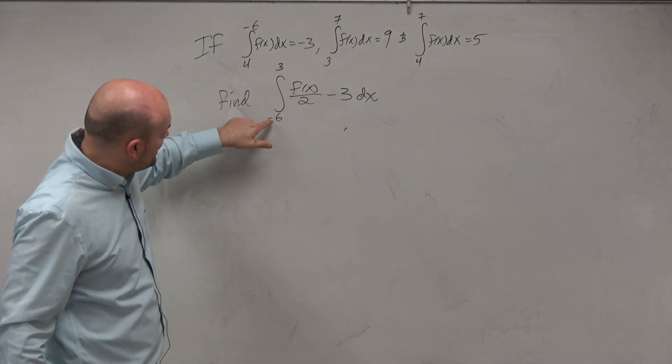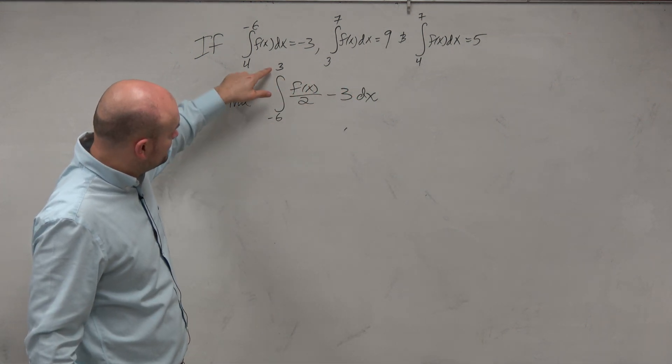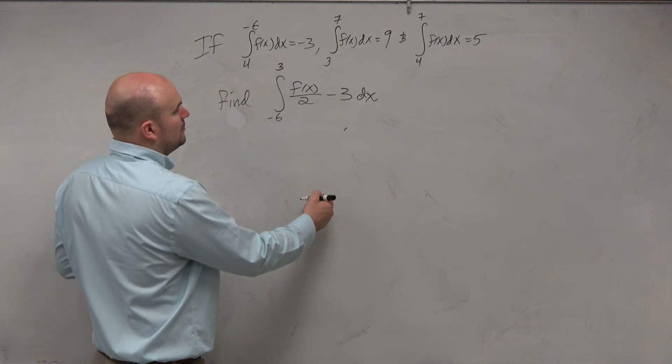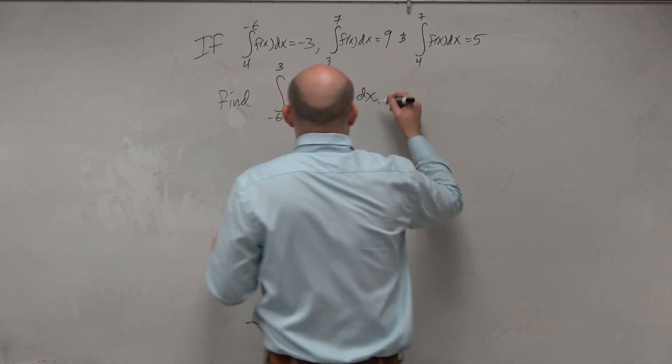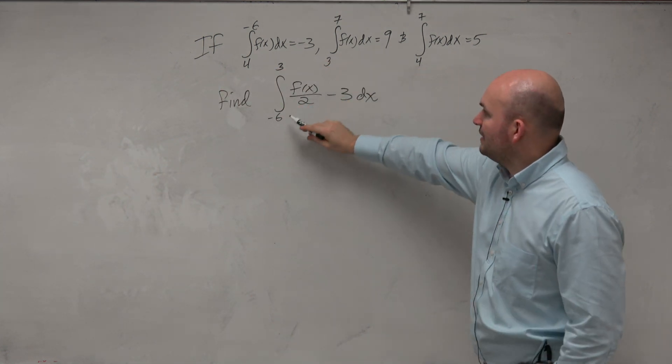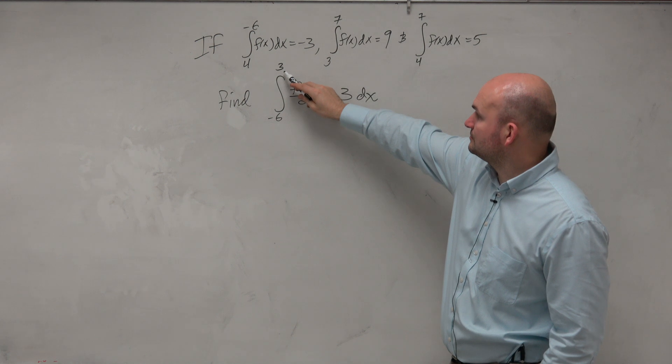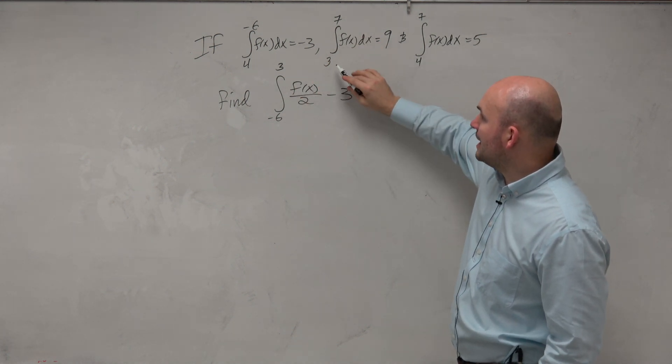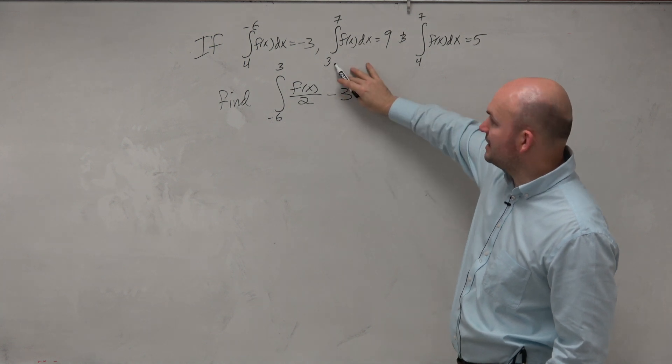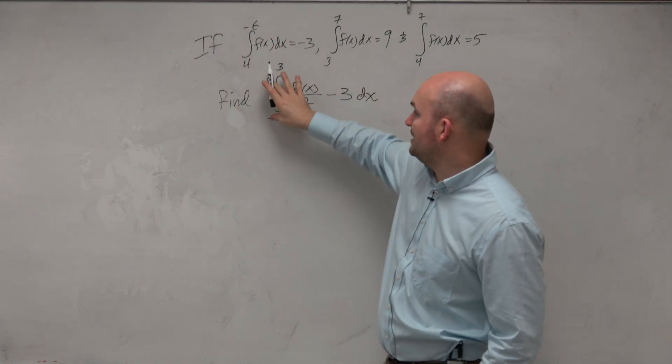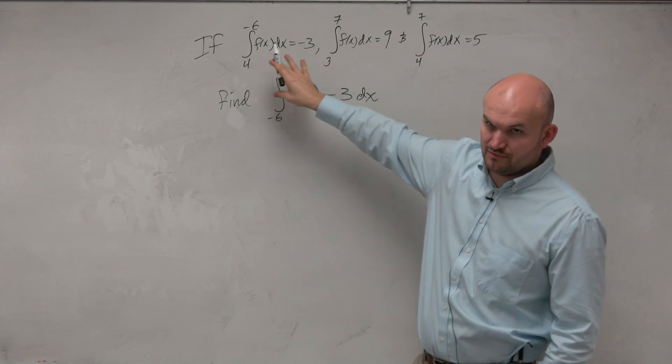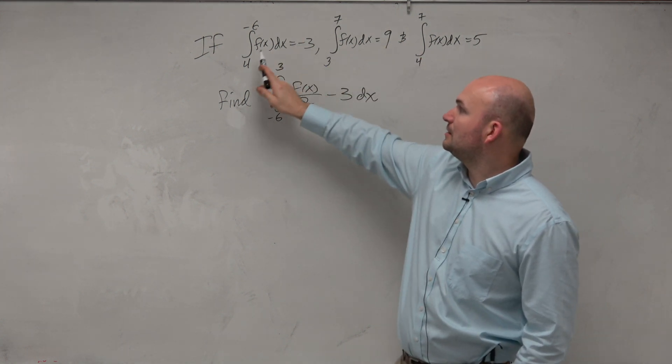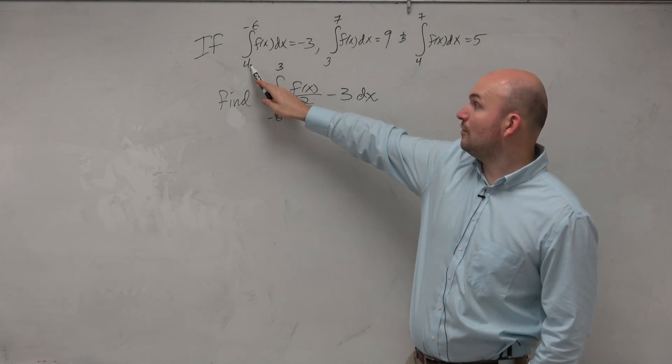Let's see what we can do. I need to start from negative 6 and go to 3. If I look at this, I can go to 3. Then I could go from negative 6 to 3. That means I could replace this.